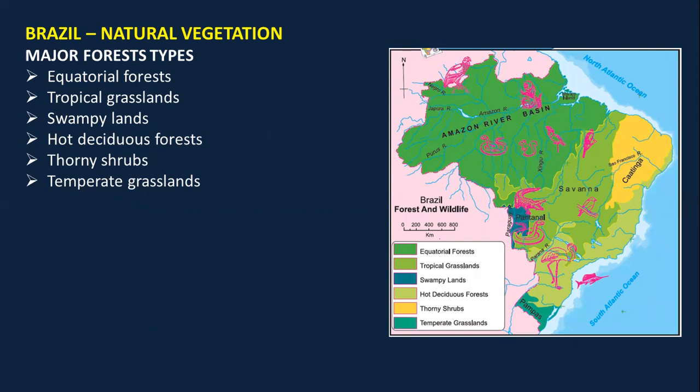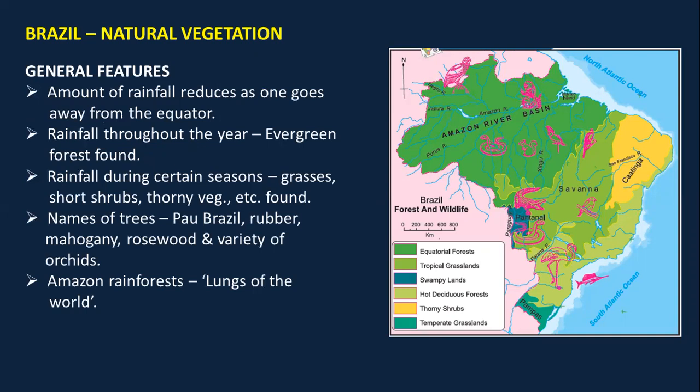Now for Brazil's natural vegetation. Brazil has different types of forests: equatorial forest where the equator passes, tropical grasslands between the equator and Tropic of Capricorn, swampy lands in Pantanal, hot deciduous forest in the rain shadow region of highlands, thorny shrubs in the drought quadrilateral, and temperate grasslands below the Tropic of Capricorn.